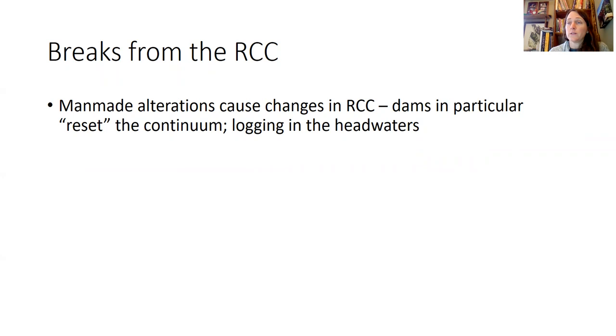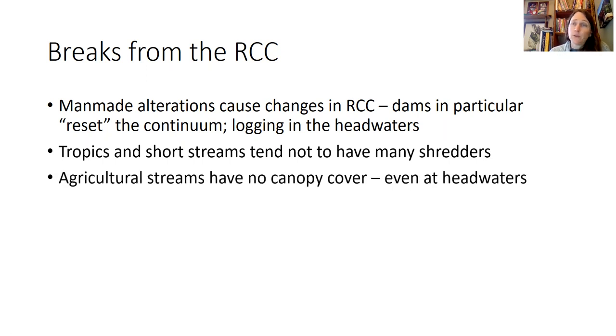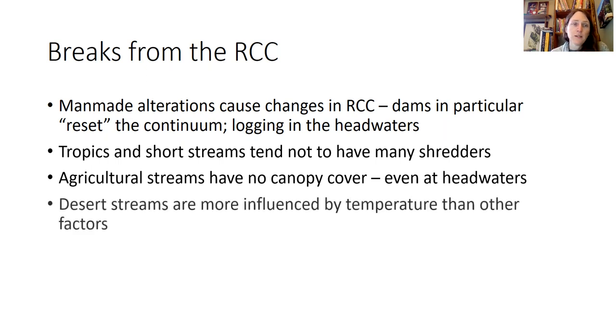Things like logging in headwaters means you don't have shaded cool water reaches, and there's a lot of light that reaches the bottom of the stream. Now you have autochthonous headwaters if you've logged your headwaters. Things like tropical streams and really short streams tend not to have very many shredders at all. Agricultural streams that have no canopy cover even at the headwaters is challenging to the river continuum concept. Desert streams tend to be more influenced by temperature than any other factors, and there's not a lot of riparian growth in some desert streams.